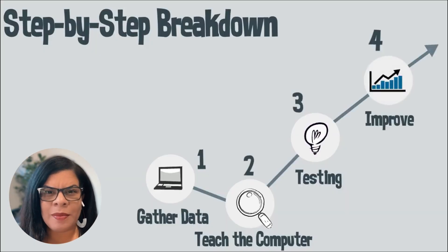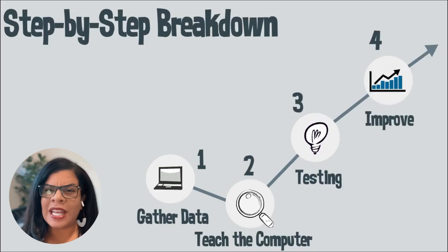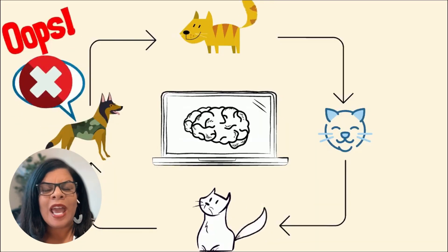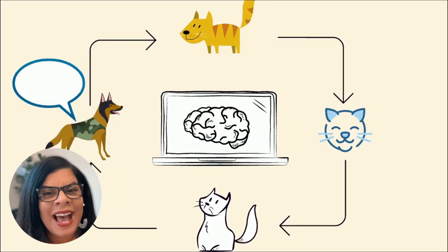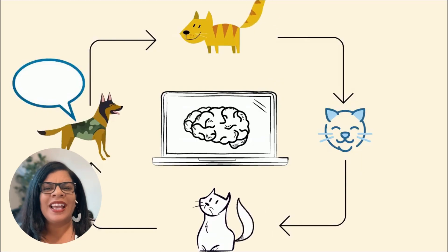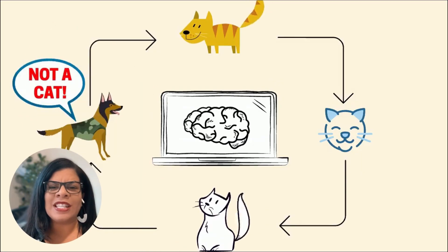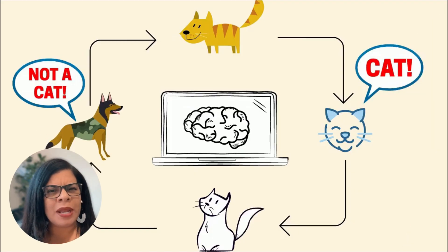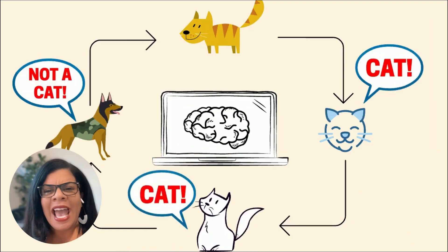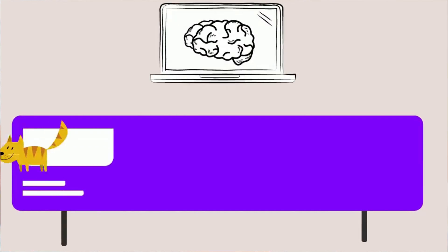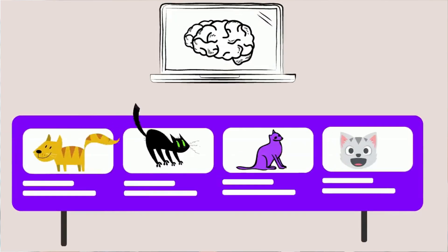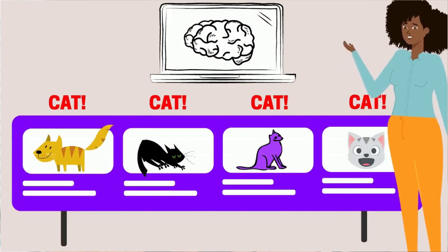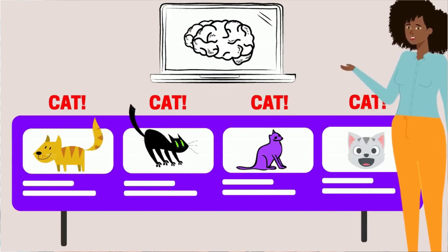Step number four: improve — remember the mistakes. When the computer gets it wrong, we step in to correct it and say, nope, that is not a cat. And it learns from those mistakes. Over time, with enough correction, it gets smarter and makes fewer and fewer mistakes. Eventually it gets so good that it can recognize a cat in a split second, even if it's just a blurry photo of a kitten peeking out of a box.